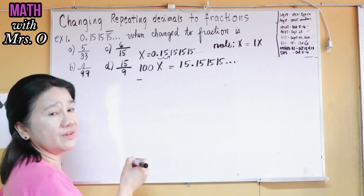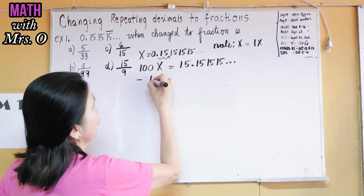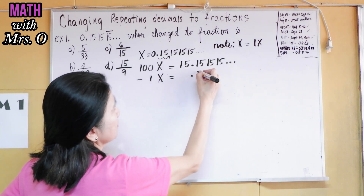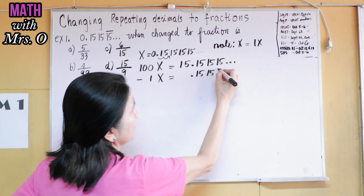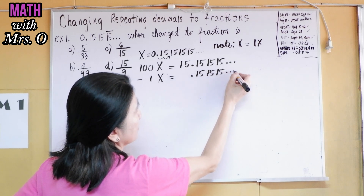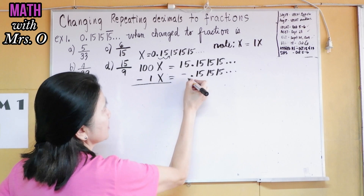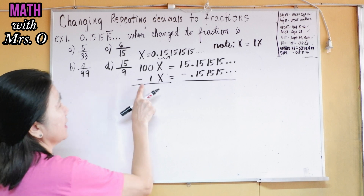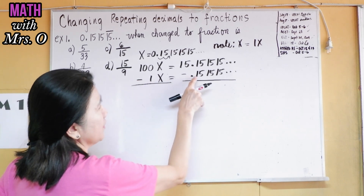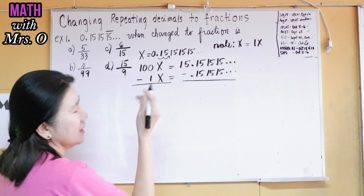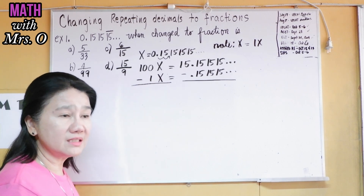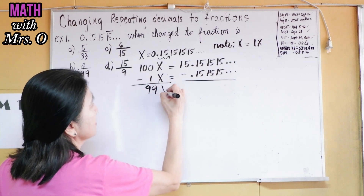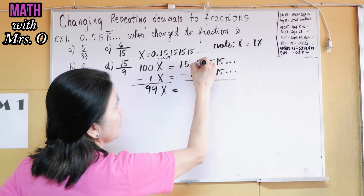And then you subtract the given x. So you subtract 1x: we have 0.151515... So you're subtracting both sides by negative 1x, or negative 0.151515. So 100x minus 1x gives us 99x.